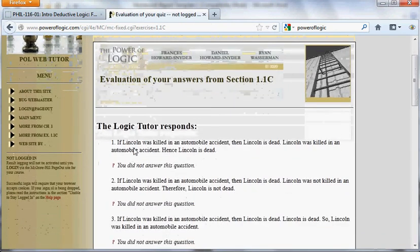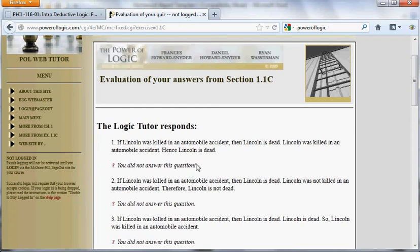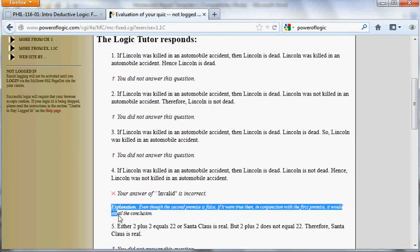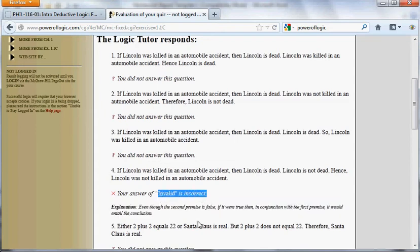You see, if I didn't answer a question, all it says is you didn't answer this question. But for number four, I see that it gave me an X and it says my answer is incorrect. If your answer is correct, it gives you a check mark, a green check mark. And it gives you a little explanation here. Since this is not a content video, I'm not going to go over it right now. But this is, in fact, a valid argument, so my answer of invalid was incorrect.